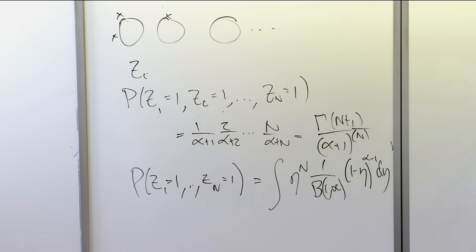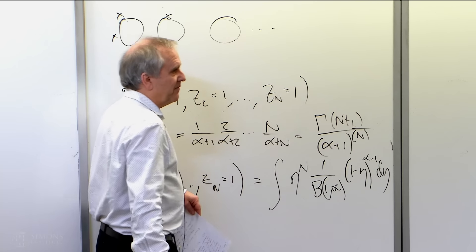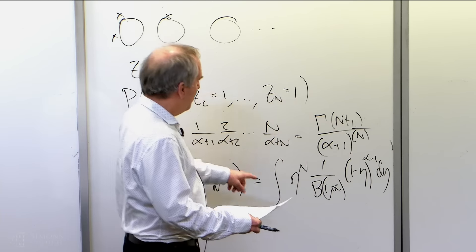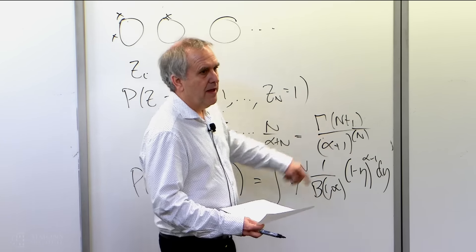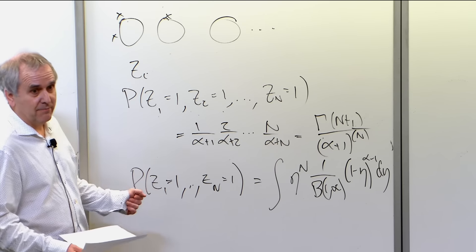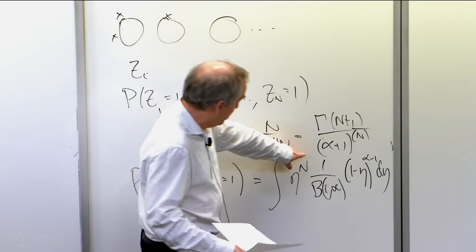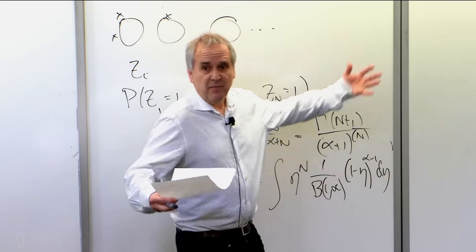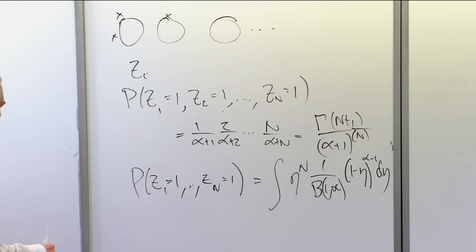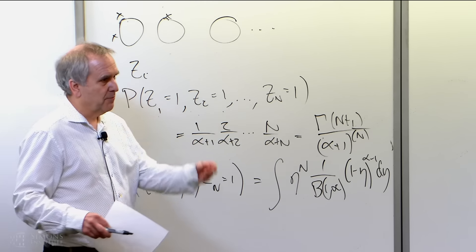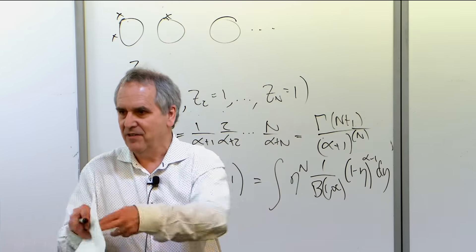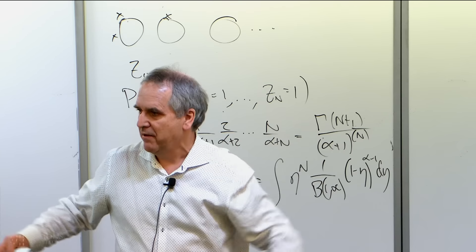This distribution has a name — it's called the beta-Bernoulli. It's a distribution gotten by taking the Bernoulli distribution and mixing it across an underlying beta. It has heavier tails than a pure Bernoulli because of the mixing — a pure Bernoulli fixes the coin-tossing probability at, say, 0.3 or 0.5, whereas here we're randomizing over the coin-tossing probability and getting a bunch of ones and zeros. So obviously we get more spread and heavier tails.